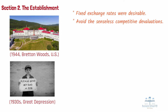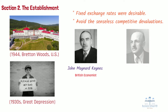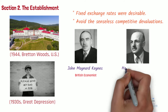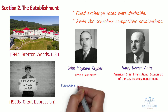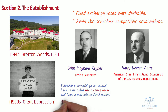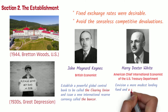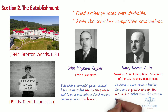Though the Bretton Woods conference itself took place over just three weeks, the preparations for it had been going on for several years. The primary designers of the Bretton Woods system were the famous British economist John Maynard Keynes, and American chief international economist of the U.S. Treasury Department, Harry Dexter White. Keynes's hope was to establish a powerful global central bank, to be called the clearing union, and issue a new international reserve currency called the banker. White's plan envisioned a more modest lending fund and a greater role for the U.S. dollar rather than the creation of a new currency. In the end, the adopted plan took ideas from both, leaning more toward White's plan.